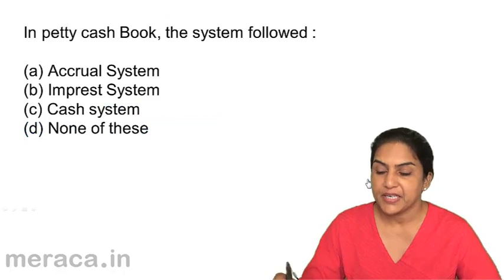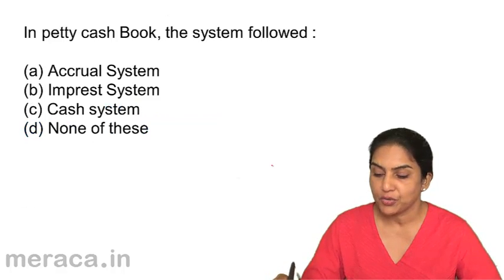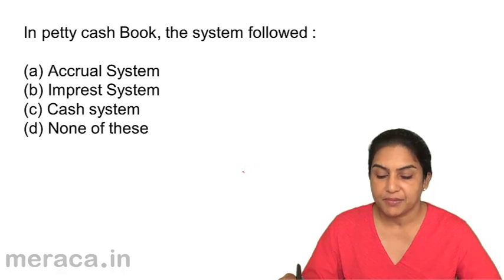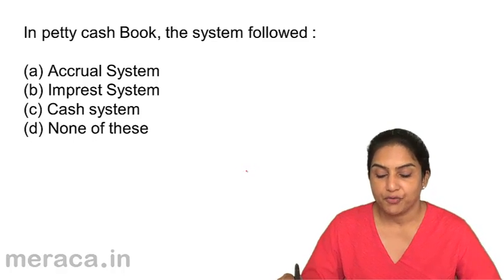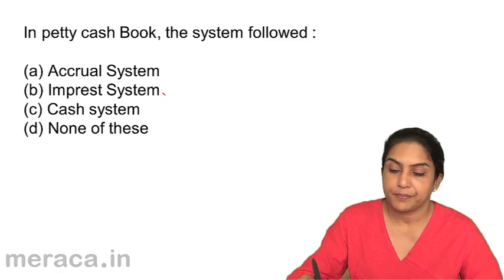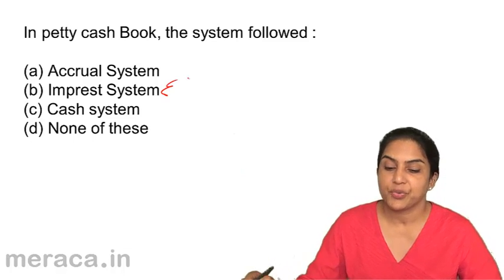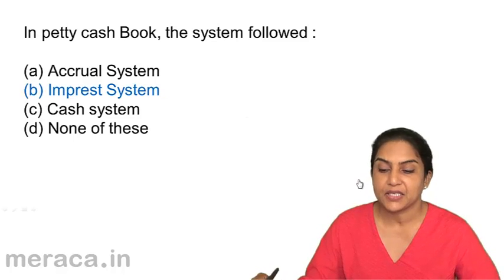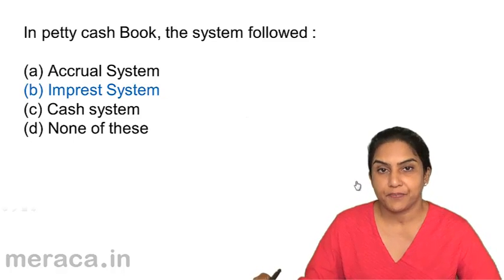Question 4: In a petty cash book, the system followed is — A: accrual system, B: imprest system, C: cash system, D: none of these. In petty cash, we normally follow the imprest system.